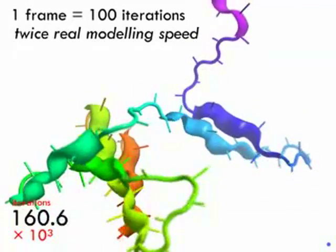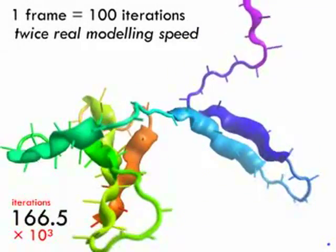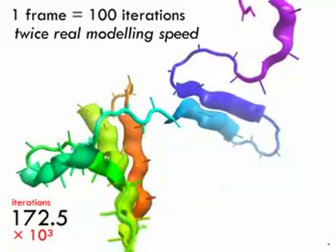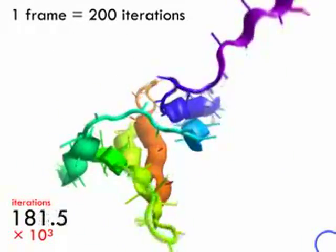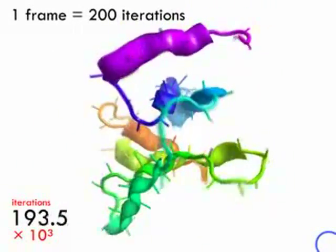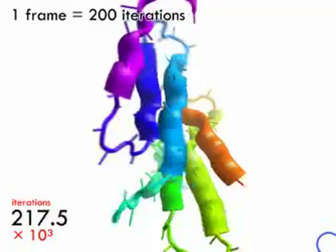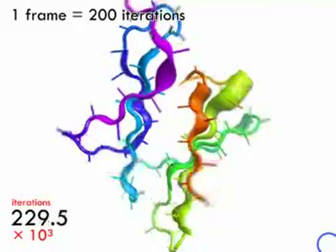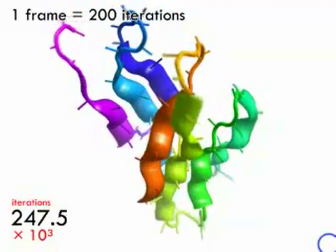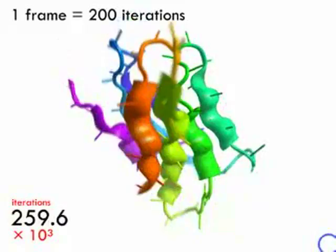This is a much larger 120 residue all-beta protein being rendered here at twice real modeling speed. If we speed up the simulation to four times real modeling speed we can start to see sheet formation. You see the purple strand starts to hydrogen bond to form another sheet and these two sheets come together to form a sandwich.